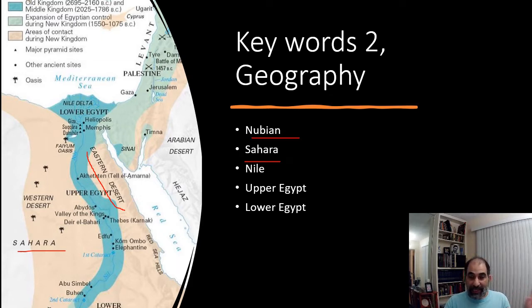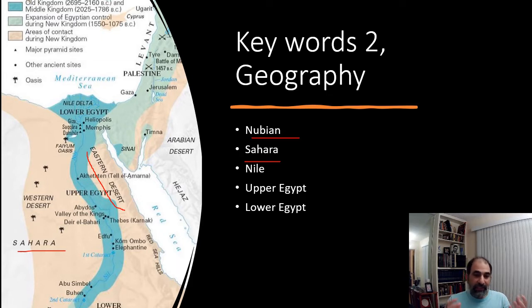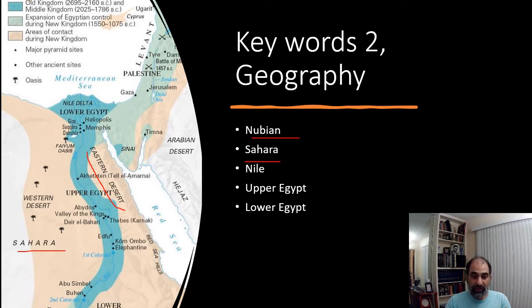The reason these deserts are important is they provide a sense of security — a kind of force field that protects Egypt from invasions for a very long time. When you look at the dates of Egypt, it was all Egypt all the time, with a couple of exceptions, while Mesopotamia had many different civilizations coming and going. Egypt was so well protected by its geography.